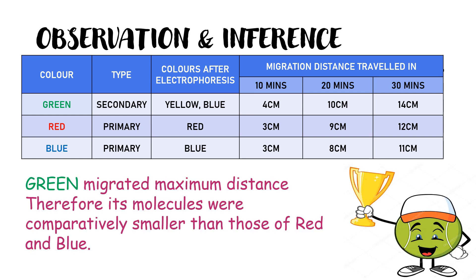From this, you can infer that green has traveled the maximum distance, therefore its molecules are comparatively smaller than those of red and blue. Now, why is this technique so important?